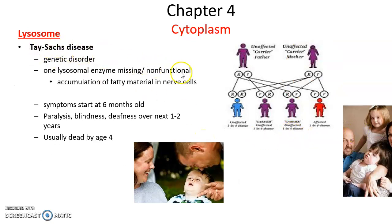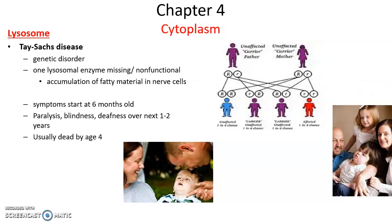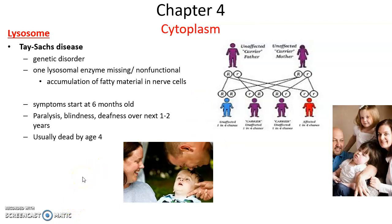Tay-Sachs disease is a genetic disorder that involves lysosomes. In Tay-Sachs disease, there is one digestive enzyme in the lysosome that is either missing or non-functioning. Because of this, fatty material accumulates in nerve cells of the child born with this disorder. Symptoms usually start when the child is around six months old. Over time they will suffer brain deterioration, blindness, and deafness, and are usually dead by age four. It is a very severe recessive genetic disorder.